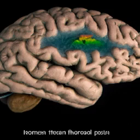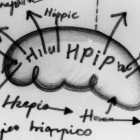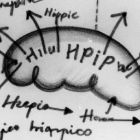Let's talk about hippocampal activity. The hippocampus is a part of the brain responsible for forming and storing memories. When we learn something new, the hippocampus plays a crucial role in consolidating that information and transferring it to long-term memory. Researchers often observe hippocampal activity to understand how memory processes work.